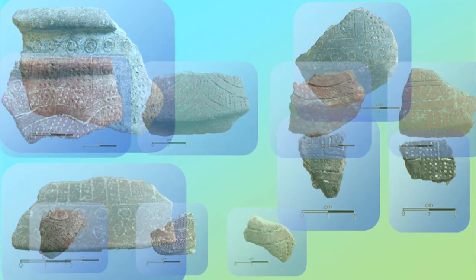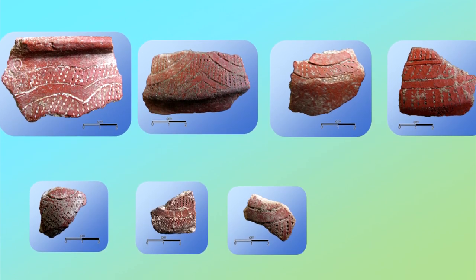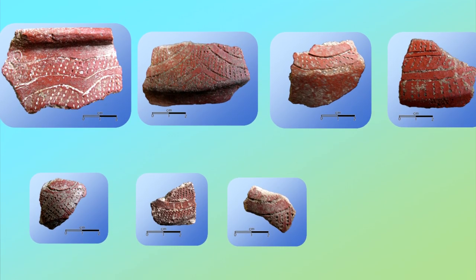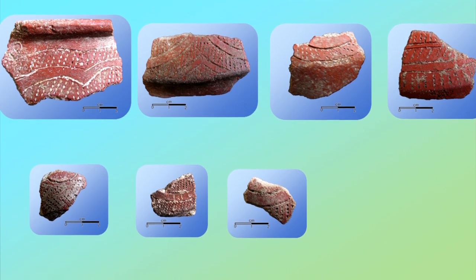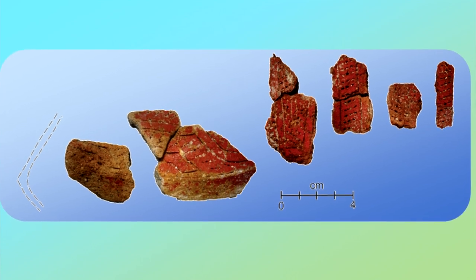Rarely, the dentate stamped technique was applied in curvilinear designs. So far, these curvilinear designs have been documented only on the red-slipped earthenware and not on the black-burnished earthenware.